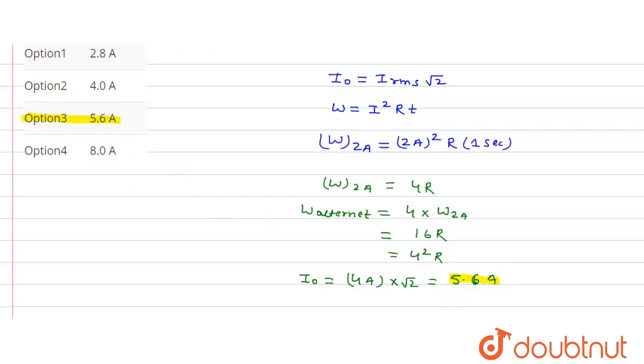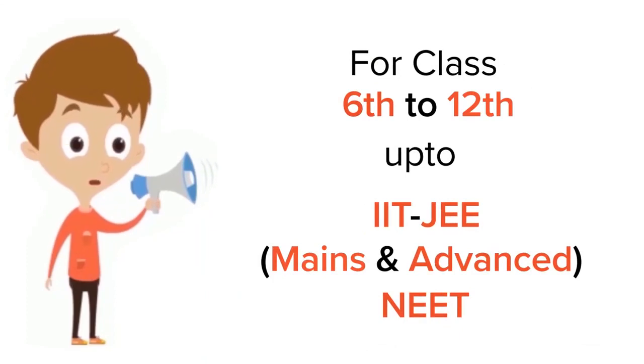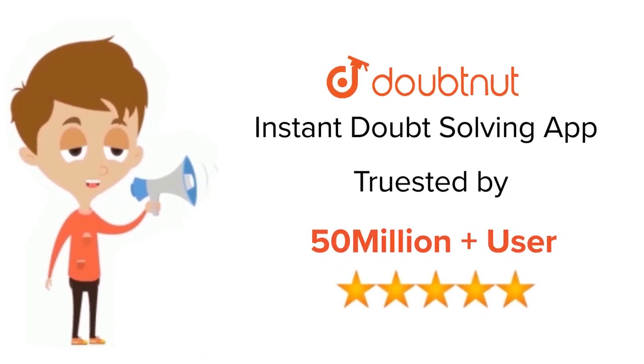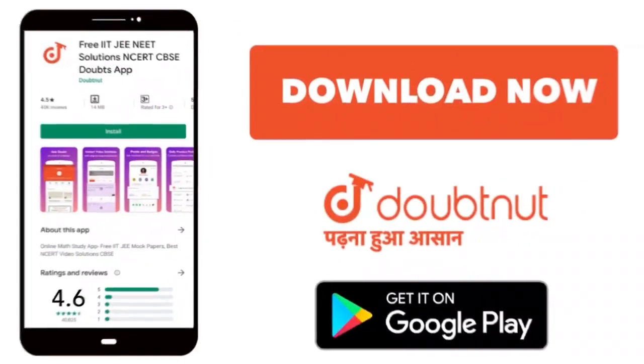So option 3 is the correct option. Thank you. For class 6th to 12th, up to IIT-JEE and NEET level, trusted by more than 5 crore students. Download Doubtnet today.